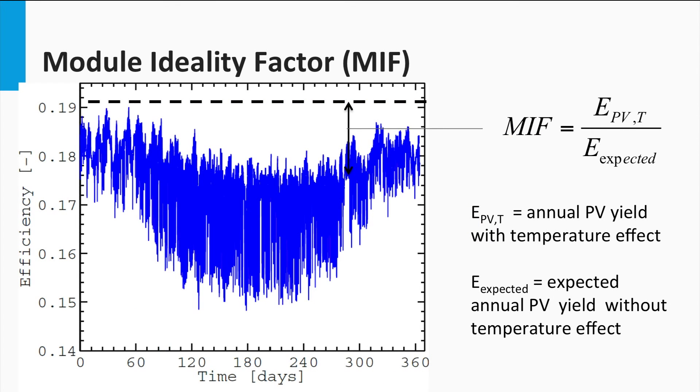The difference between the expected PV yield with rated efficiency and the actual yield due to the temperature effect gives rise to a module ideality factor. This is nothing but the ratio of the expected PV yield actually available, taking into account the temperature effects. If the module ideality factor is 80%, that means that the module has lost 20% of its annual energy yield due to temperature effects. If the module ideality factor is 100%, that means the module is immune to temperature changes.